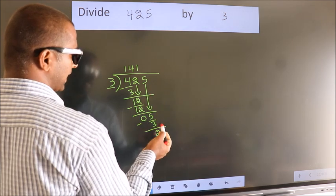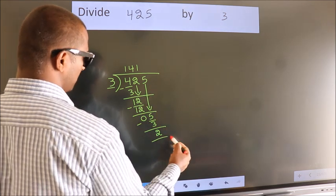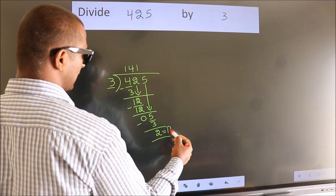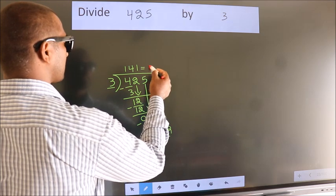No more numbers to bring it down. So we stop here. This is our remainder. This is our quotient.